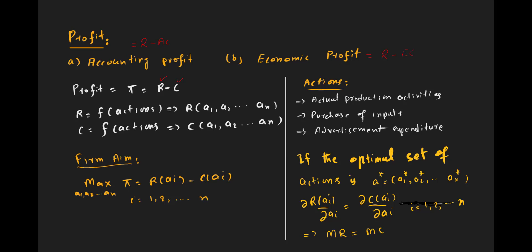In this video lecture we are going to discuss the concept of profit in economics. By profit we mean the difference between total revenue of the firm and total cost of the firm. Profit is categorized into accounting profit and economic profit. We will discuss what each means, how to calculate them, and what they imply.